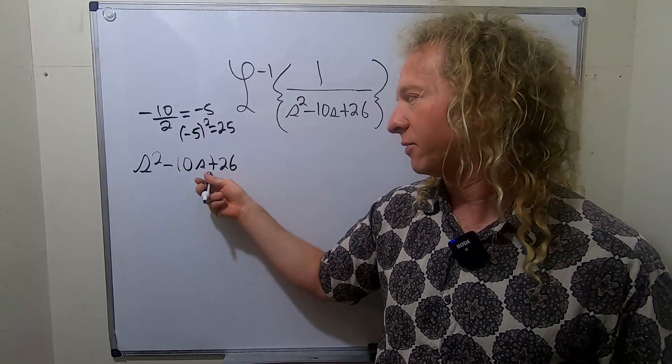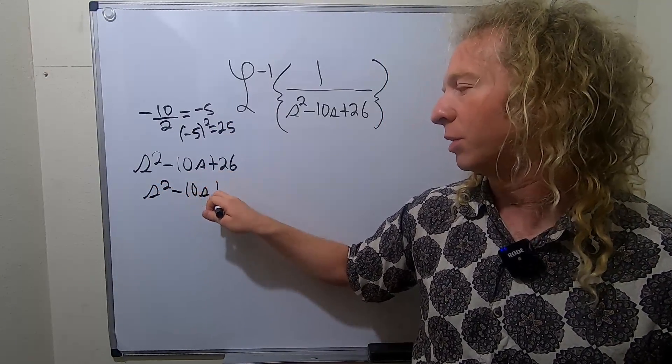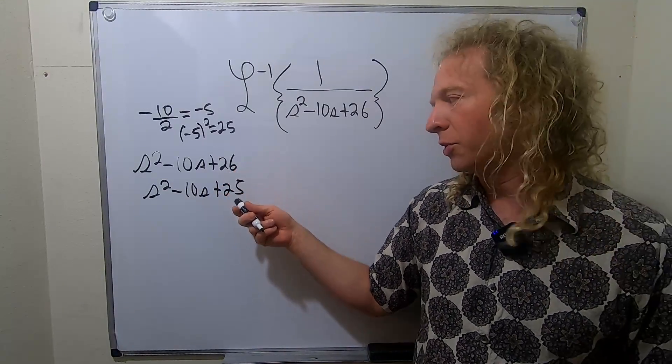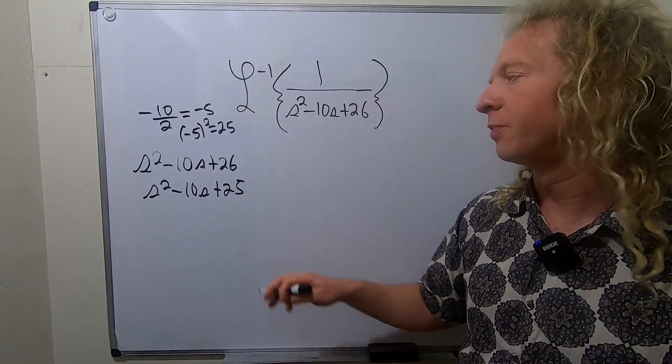So what we have to do is write it like this: s squared minus 10s plus 25. We have to add a 25 there. But we have a 26 here already. So in order to get from 25 to 26, we just have to add 1.